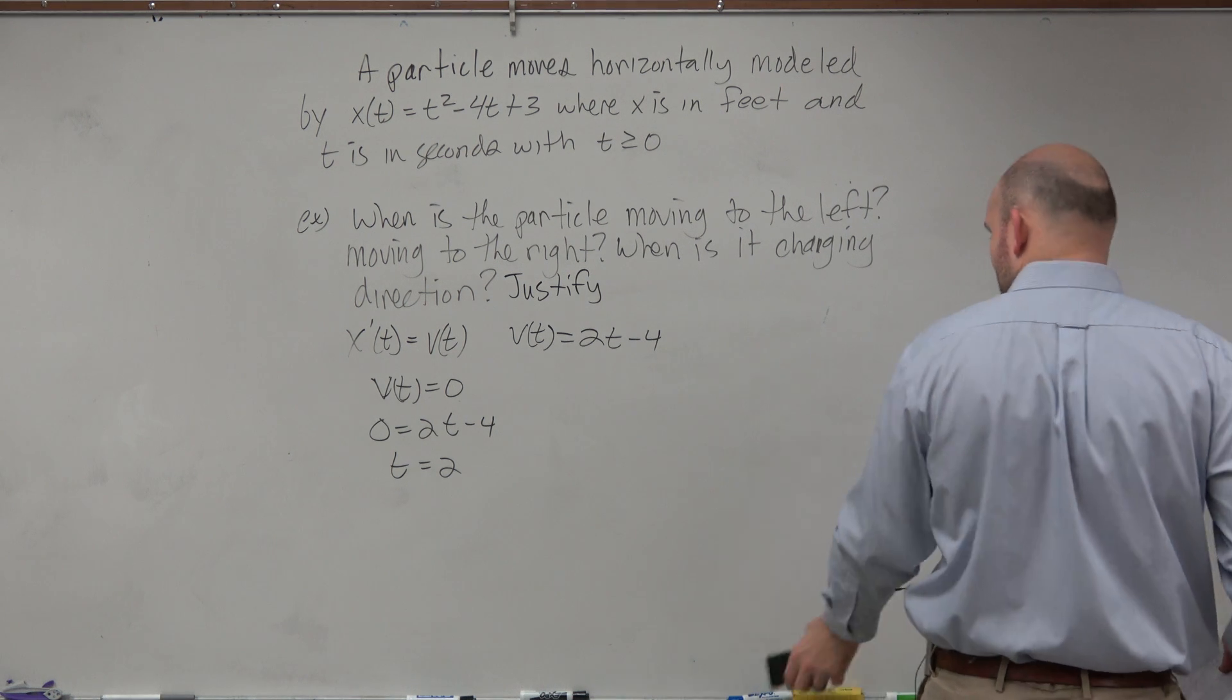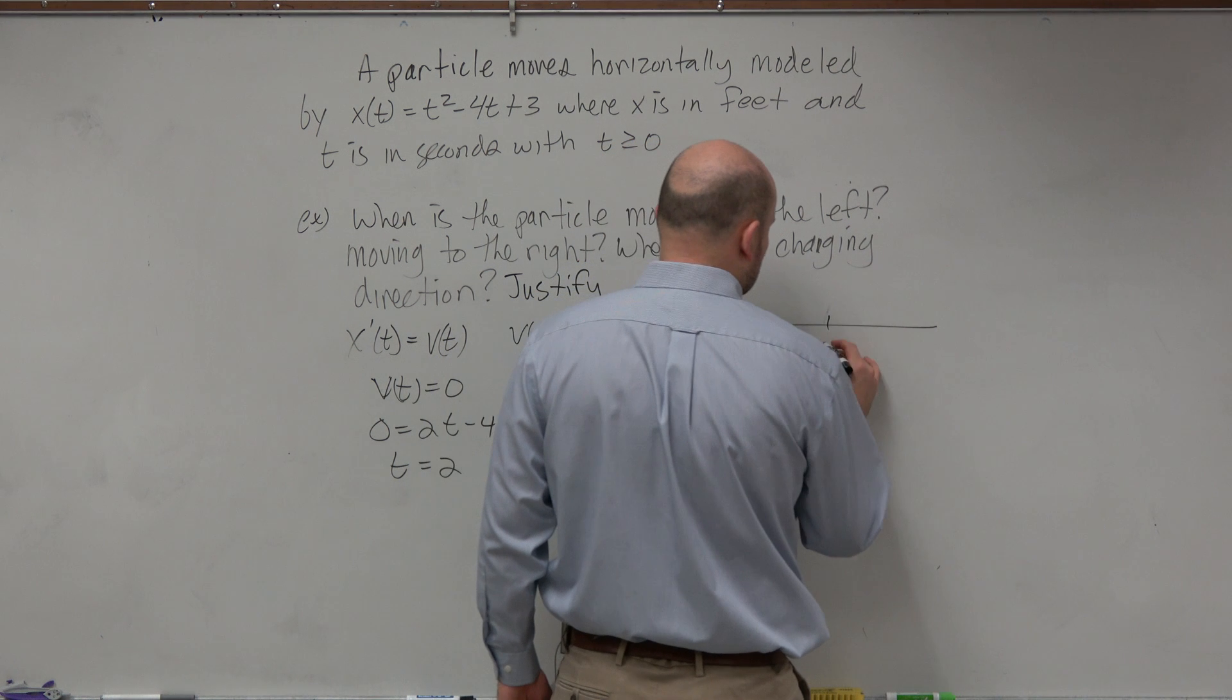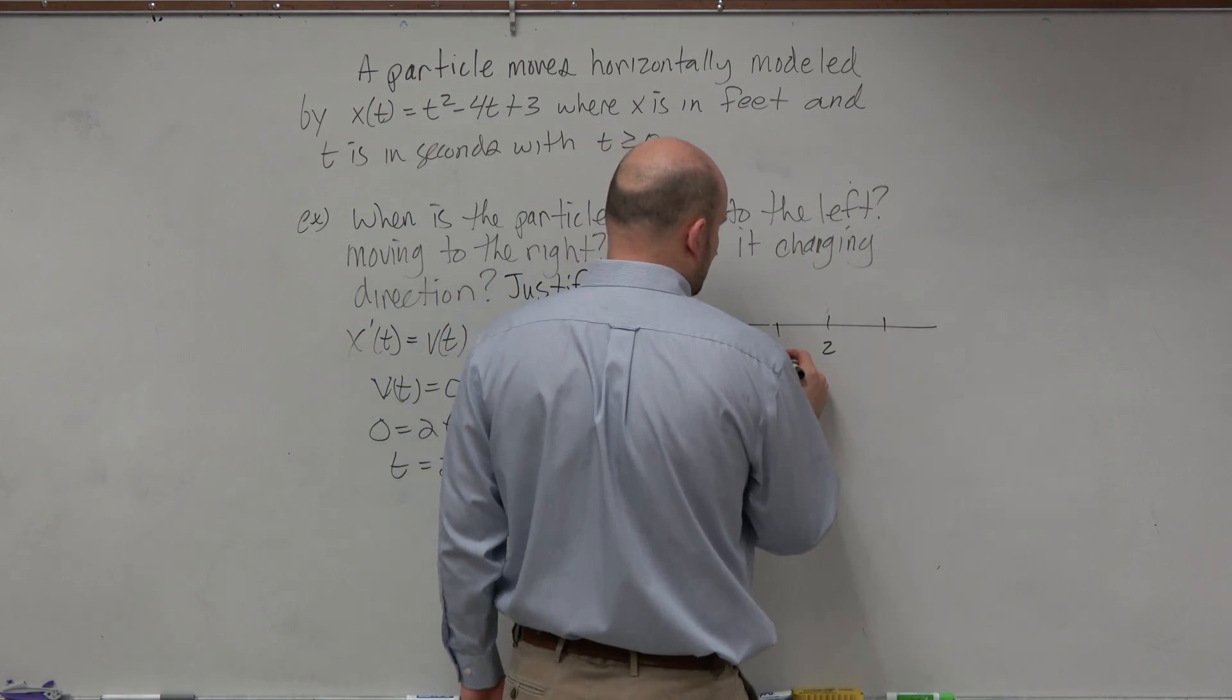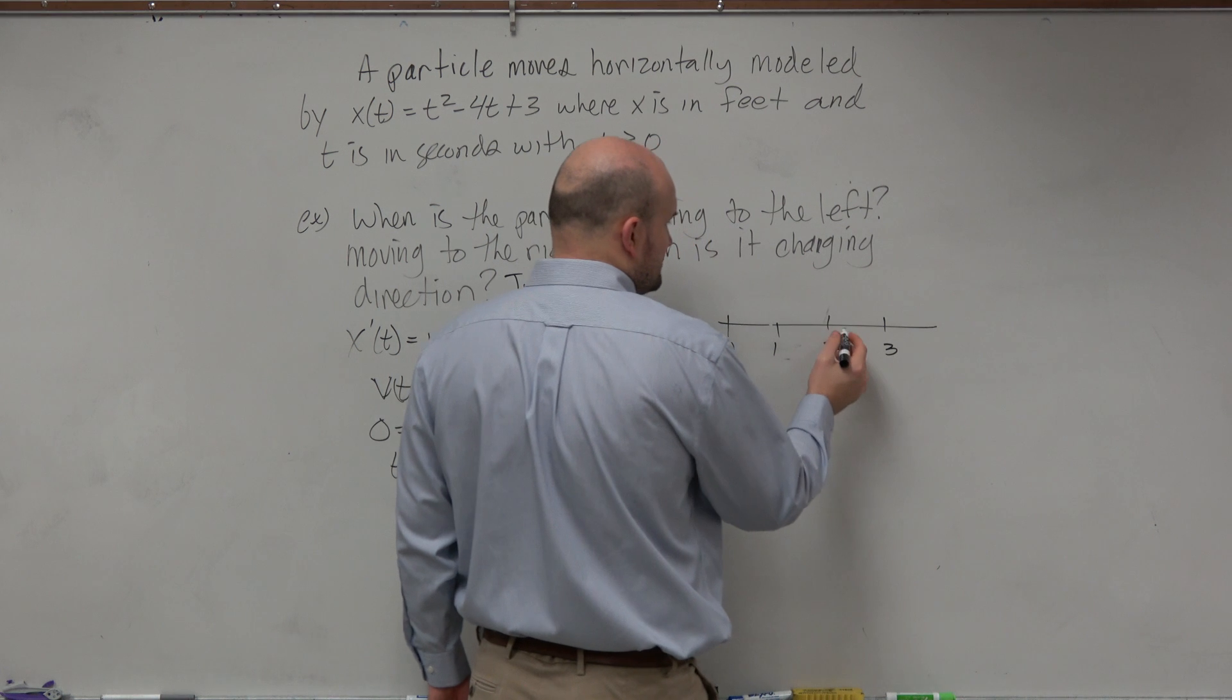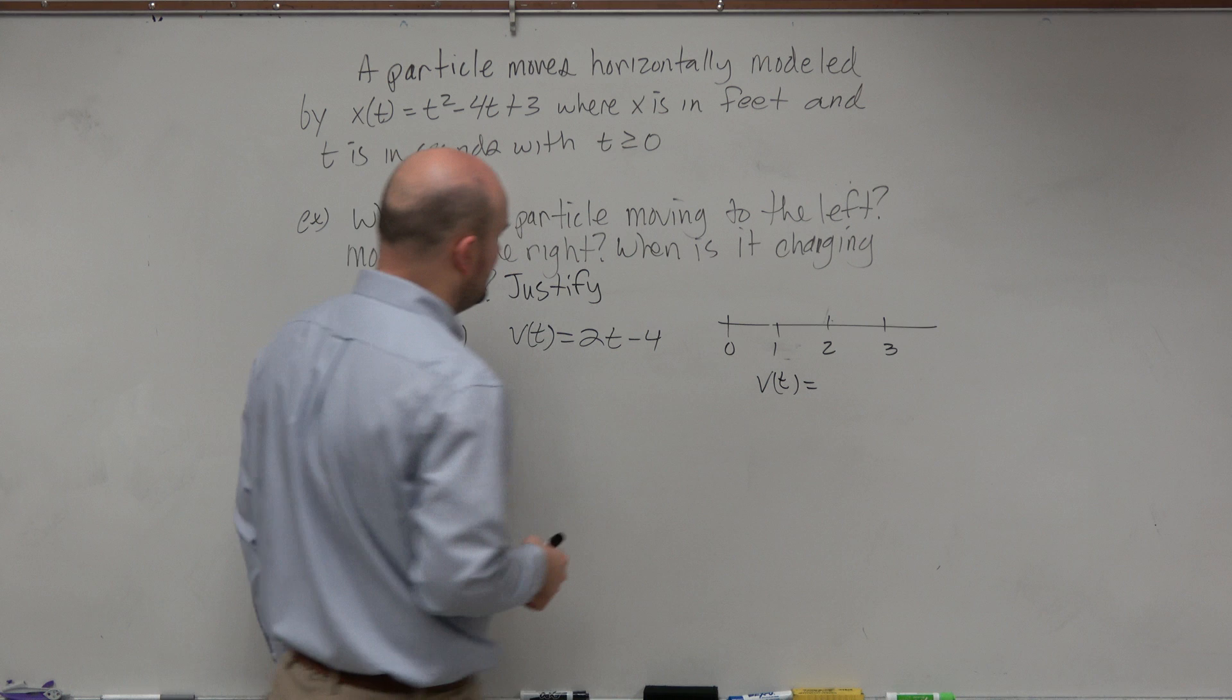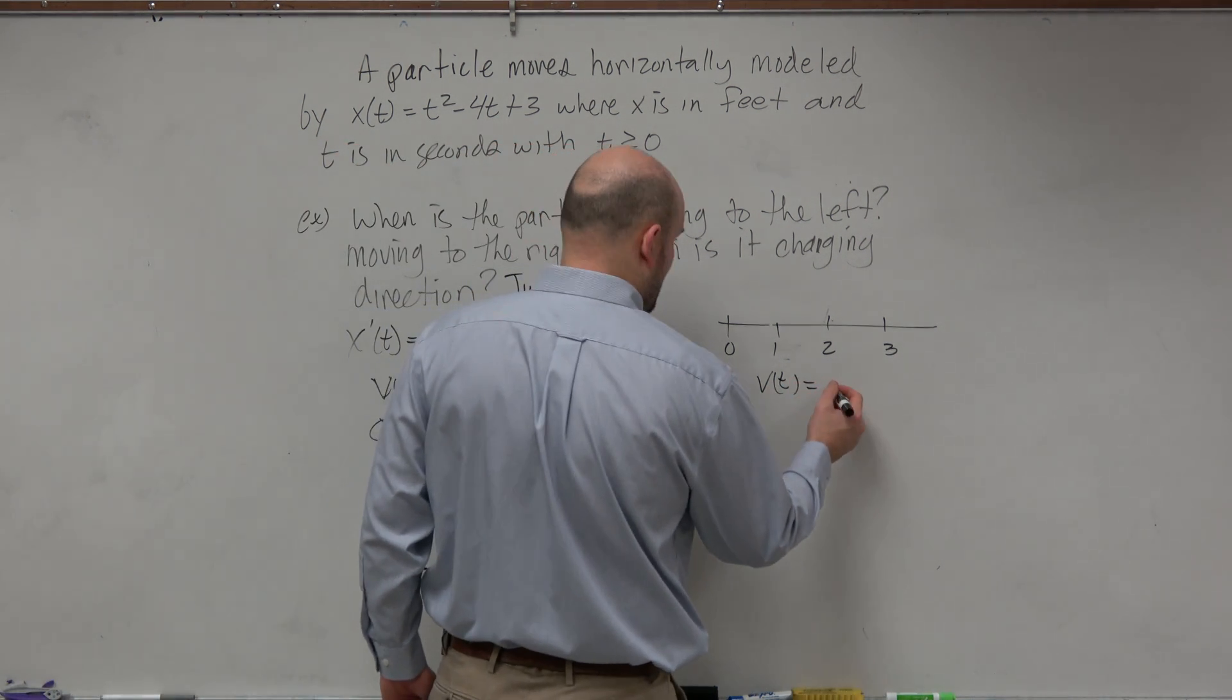So there's a couple of ways we could do this. We could do the number line test, kind of like the first derivative. So we have 0, possible changing direction, and then any number over here. And we could plug in v sub 1, or we could plug in 1, and we could plug in like 3. So we know here at 2, it's changing direction. And we can just do v sub 1, because with this problem, it's not too hard.